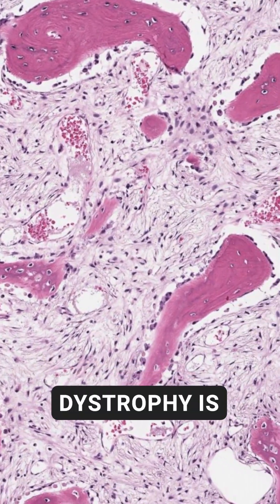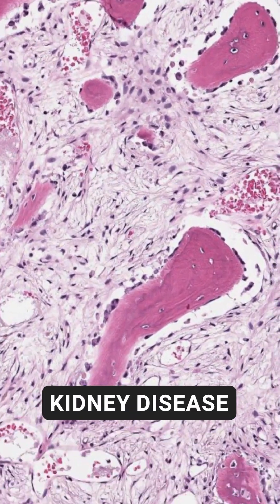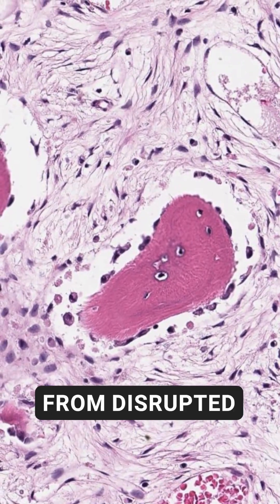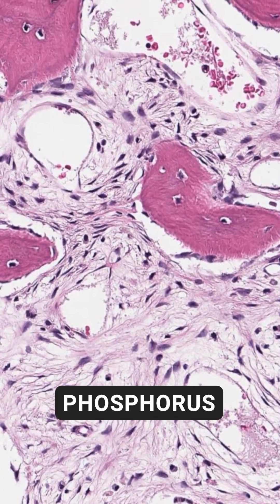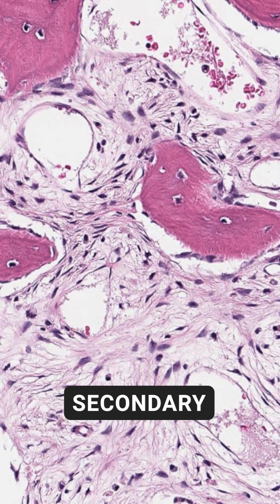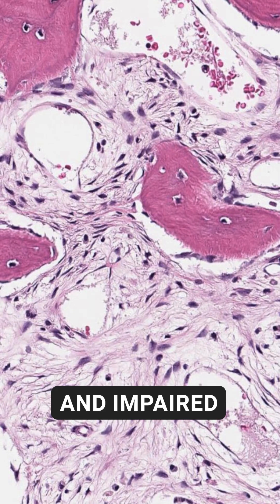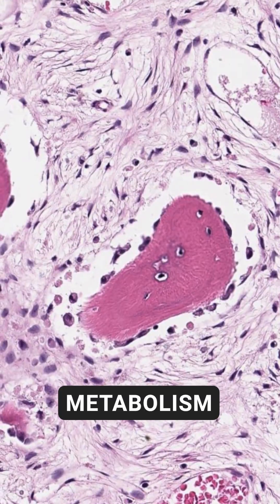Renal osteodystrophy is a complication of chronic kidney disease. It results from disrupted calcium-phosphorus homeostasis, secondary hyperparathyroidism, and impaired vitamin D metabolism.